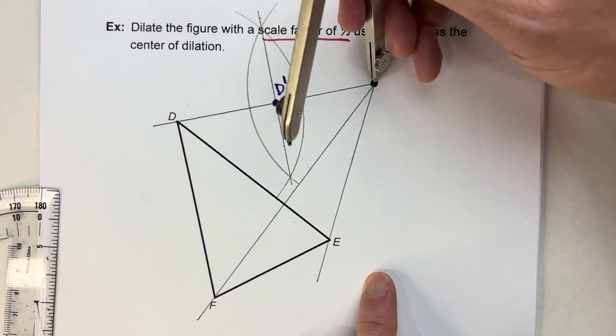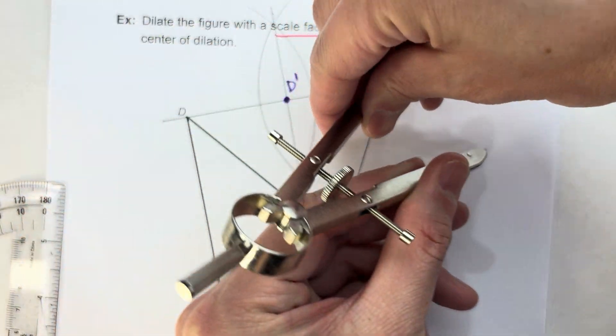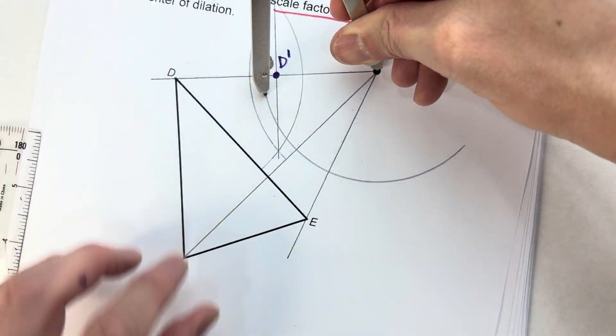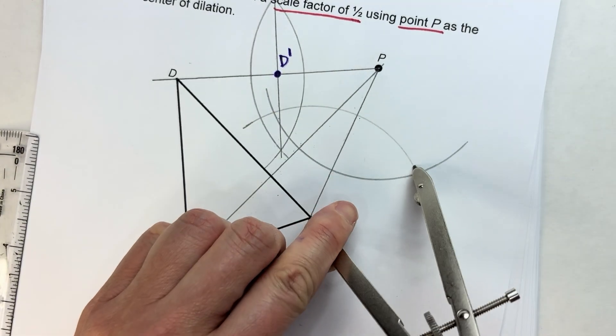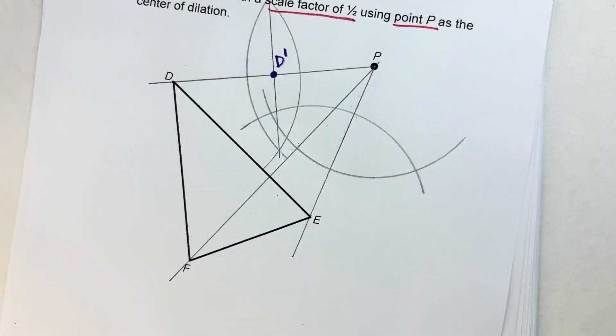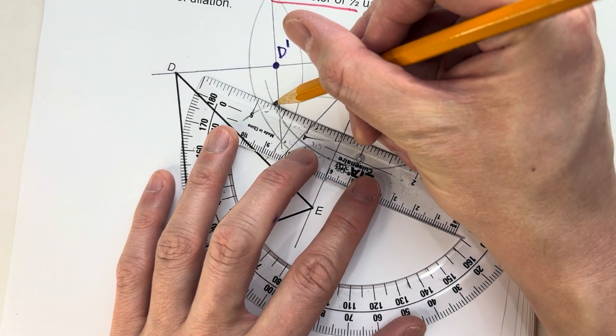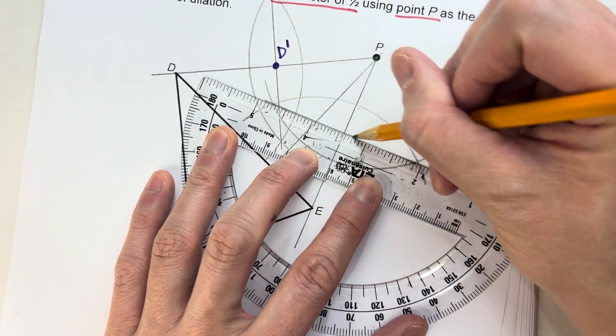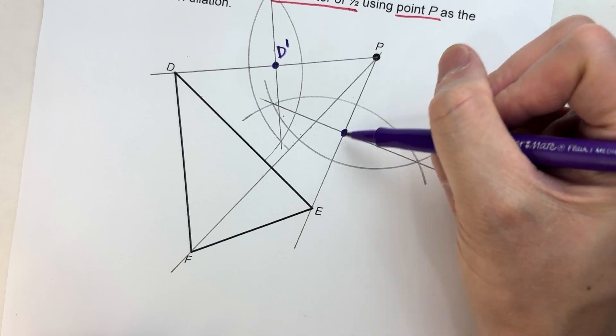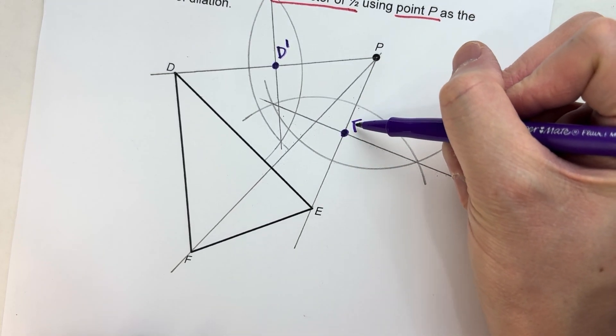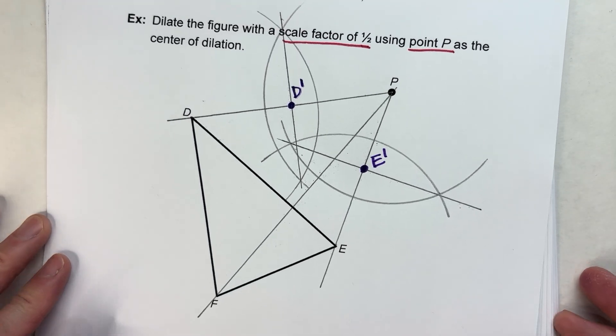Let me do E here. So again, set my compass for more than half the distance and I'll swing an arc from one end. Keep that same distance on my compass and swing an arc from the other end. And where those two arcs intersect here and here, that will determine my perpendicular bisector. And where that intersects my original line segment is my E prime. We're almost done. I only got one more to do then.